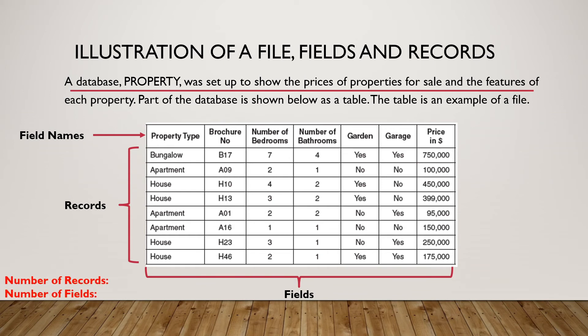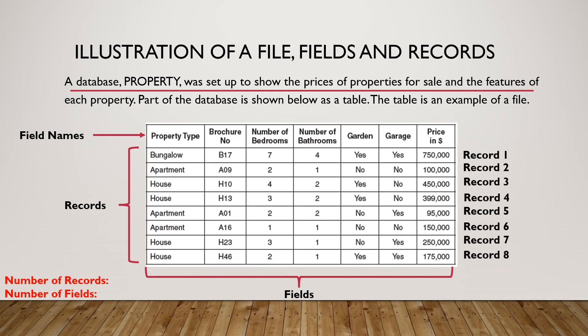So if you ever have to count the number of records and the number of fields in a particular file, the number of records will be equal to the number of rows except the first row. So here we'll be having eight records, and the number of fields will be equal to the number of columns, which will be equal to seven fields.